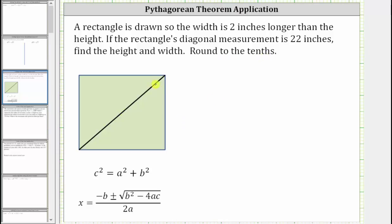So looking at this rectangle here, this is the diagonal, which we know has a length of 22 inches. We also know the width is two inches longer than the height. Let's use the variable h for the height, so this length here is h inches. And because the width is two inches longer, we can use the expression h plus two for the width.